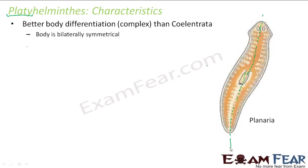The body is made of three layers of cells — that is why it is triploblastic. They have three layers during embryonic development: ectoderm, endoderm, and mesoderm. As the number of layers increases, the complexity of the organism also increases. Ectoderm forms all the external things, endoderm forms some internal parts, and mesoderm helps in locomotion.